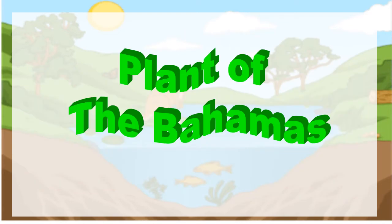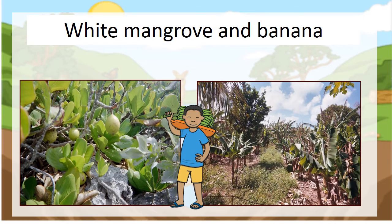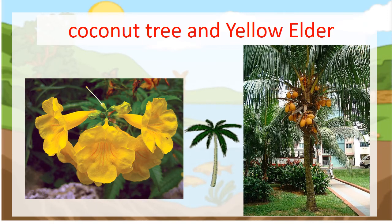Plants of the Bahamas include our hibiscus and our sea grape, our white mangroves and banana, our coconut tree and our yellow elder.